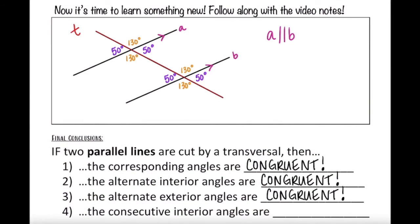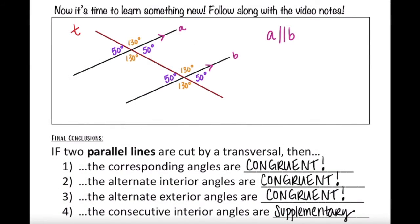The last type is consecutive interior angles, and these are a little different. Consecutive interior angles — like this 50-degree angle and this 130-degree angle — are on the same side of the transversal and inside the parallel lines. They are not equal to each other, but they do add up to 180 degrees. The same is true on the other side: this 130-degree angle is consecutive interior to this 50-degree angle, and they add up to 180. So if two parallel lines are cut by a transversal, the consecutive interior angles are supplementary.